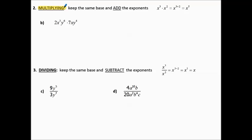Now we get to what to do when we're multiplying or dividing. Multiplying requires keeping the same base and adding the exponents. For example, x cubed times x squared: x cubed is x times x times x, and x squared is x times x. So altogether we have 5 x's, which gives x to the fifth. The fast way is to think: we have 3 x's and 2 more x's, so multiplying makes 3 plus 2 x's, or x to the fifth. The fast way is to add the exponents.